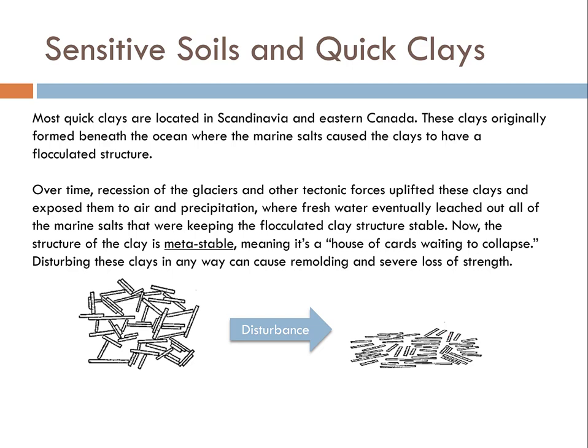So, where are most of these quick clays that have sensitivities greater than 50 or even up to 100? Most of them are located in the Northern Hemisphere, in places like Scandinavia and Eastern Canada. And the way that these clays formed is really, really interesting. They originally formed as marine clays in a marine environment, so beneath the ocean. And the salt that was in the ocean at the time these clay particles settled and formed at the bottom of the ocean, the salt made the double layers in these clays very, very small, very thin. And so the clays formed a flocculated structure.